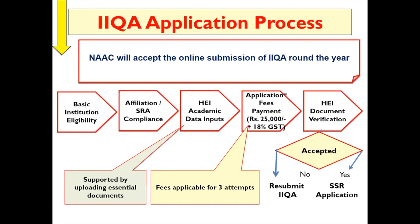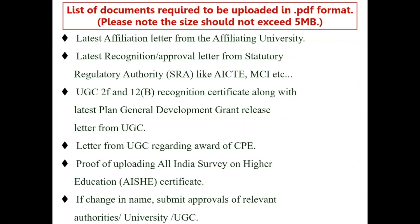For example, if the IEQ is rejected today, you have two more attempts within one year to apply for NAAC assessment and accreditation. However, after one year or after three failed attempts, if you are unable to officially submit your IEQ, you need to apply afresh and pay the requisite fees of 25,000 plus 18% GST.